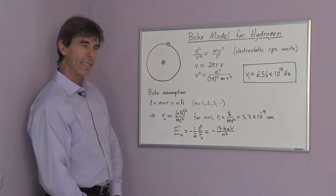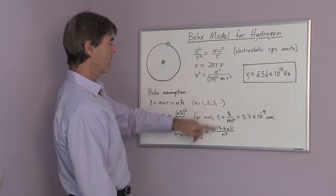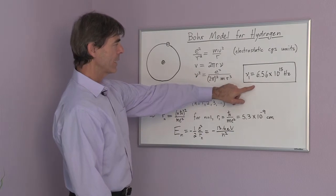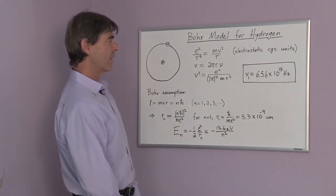Now we can calculate the frequency of orbital motion, at least for the n equals 1, and that frequency, substituting n for r to the third power, this number, the Bohr radius, we get the frequency of 6.56 times 10 to the 15 hertz.